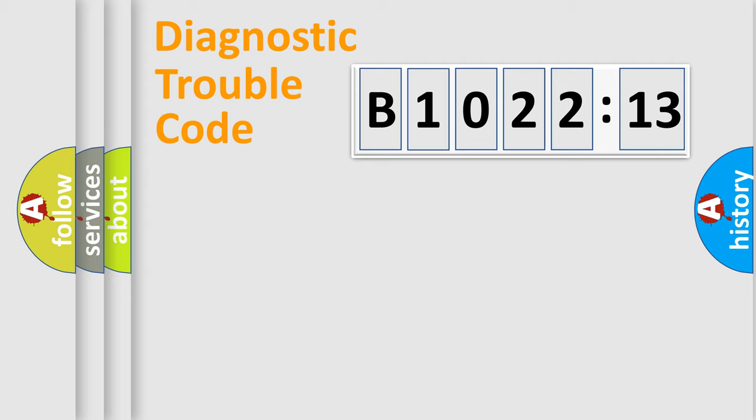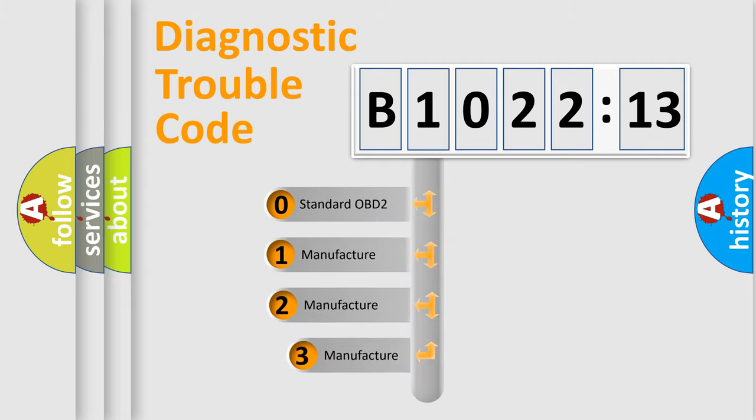Powertrain, Body, Chassis, and Network. This distribution is defined in the first character code.